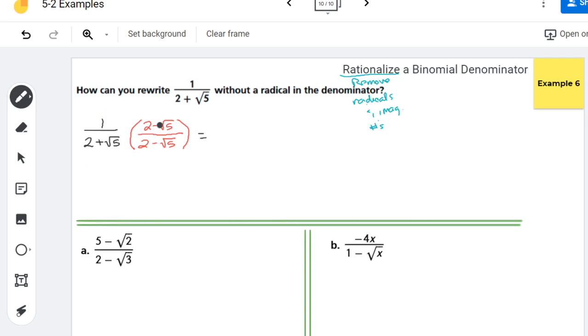Well here I have 1 times 2 minus root 5, so that's just 2 minus root 5, because 1 times anything is itself. But down here, I'm going to have to distribute. So I kind of extend my line, because I know I'm going to write a lot here.